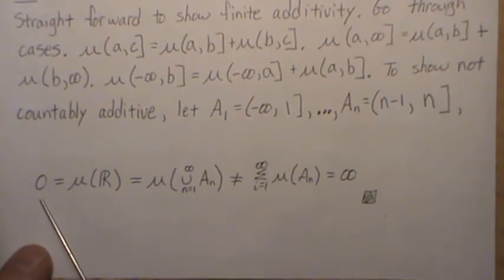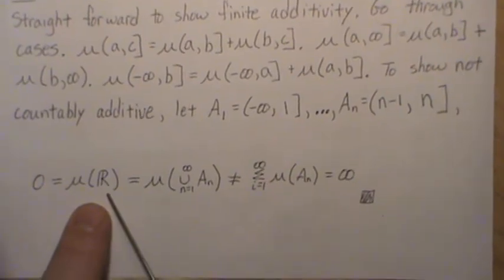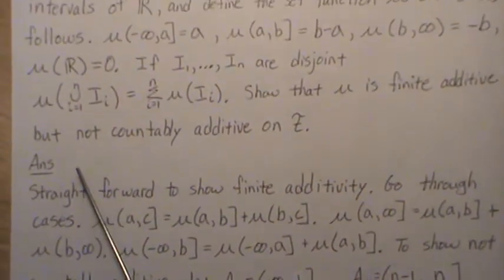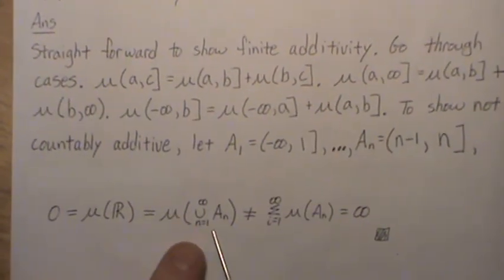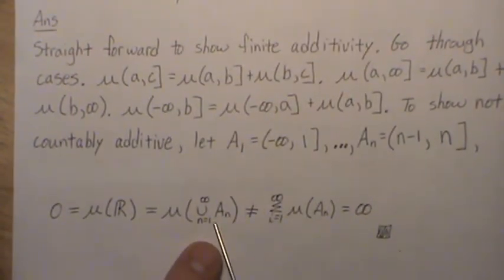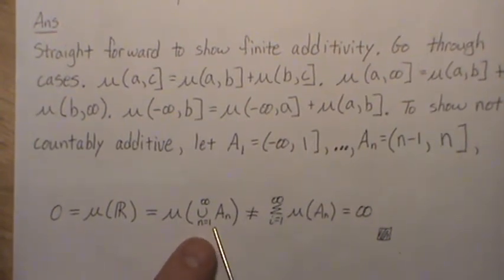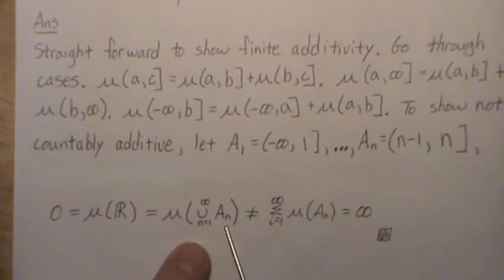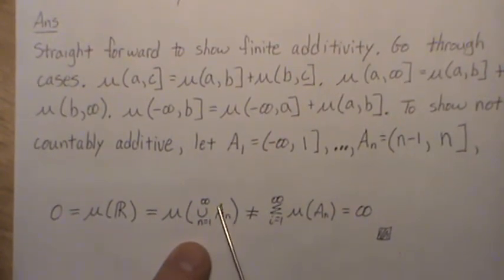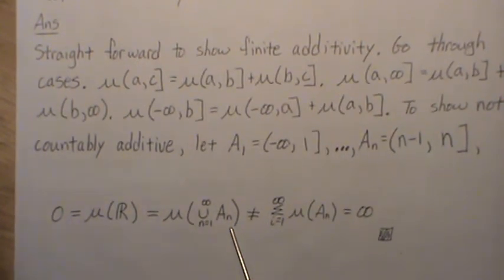So we're creating disjoint sets across the number line here. Now, we know that the measure of the entire space is zero. And that's, they defined it that way. Now, we want to look at the union of all these sets. And if it's countably additive, it should equal the sum of the individual measure of these set functions.